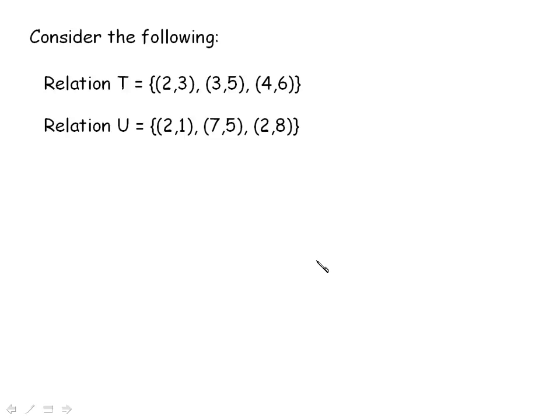If we consider this example, we are given two relations, in this case relation t and relation u. And the question is, which of the above is a function? The way you identify this is if any two ordered pairs have the same x coordinate, then they're not functions. So this one is not a function.